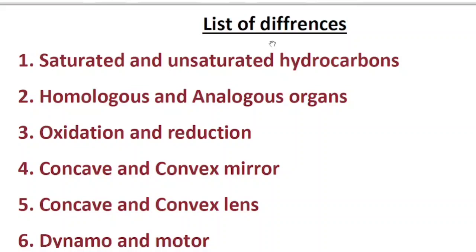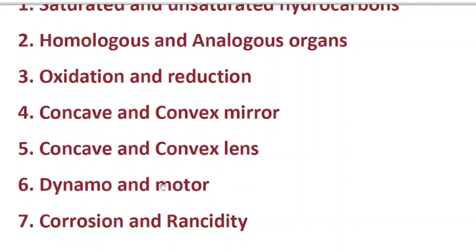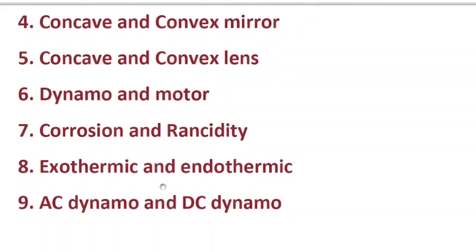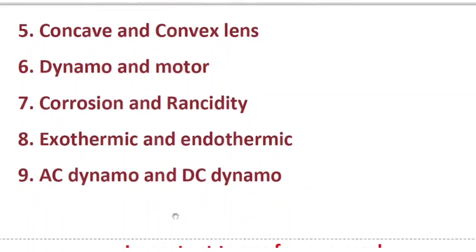They may ask for differences for two to three marks or four marks. Write the differences between: homologous and analogous organs, oxidation and reduction, corrosion, concave and convex mirrors, concave and convex lenses, dynamo and motor, corrosion and rancidity, exothermic and endothermic reactions, AC dynamo and DC dynamo. If you learn differences, you can also write definitions, and it will help you score marks in other areas.